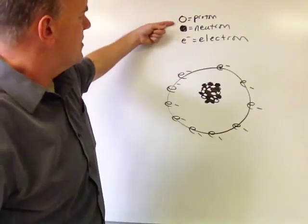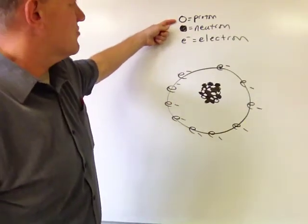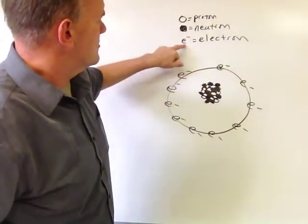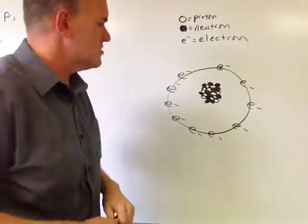So here in this drawing we have the clear things represent protons, the black things represent neutrons, and the little e-dashes represent the negative electrons.